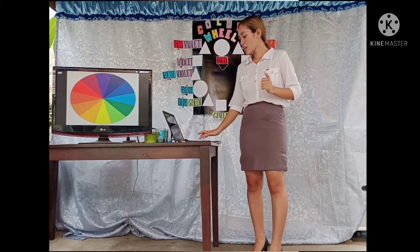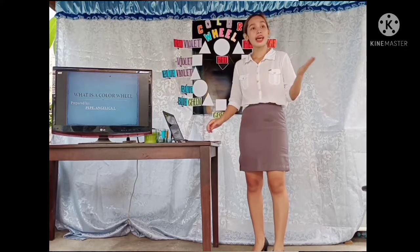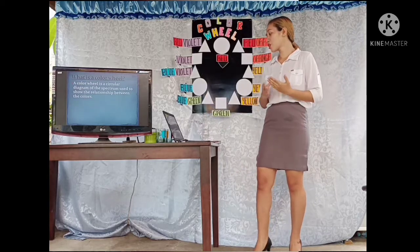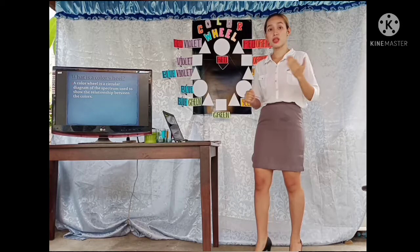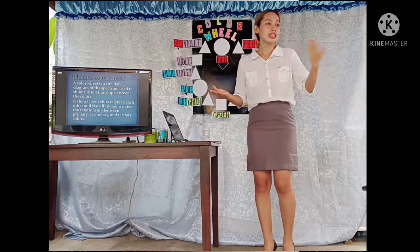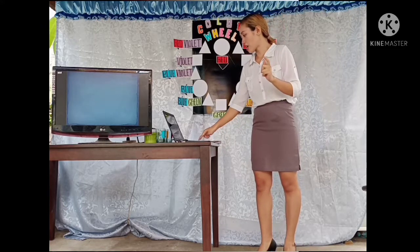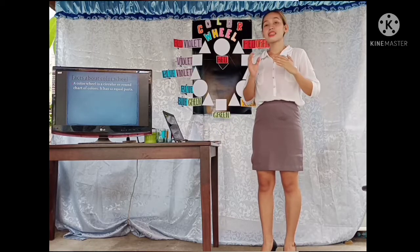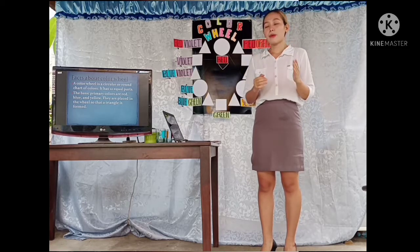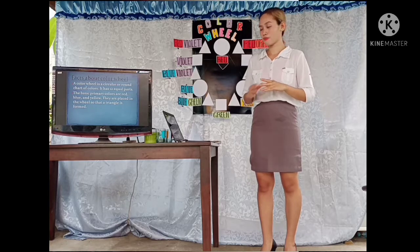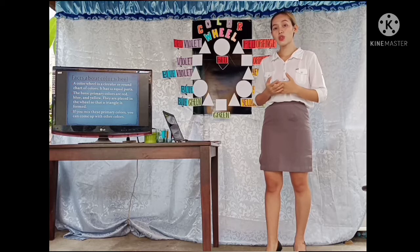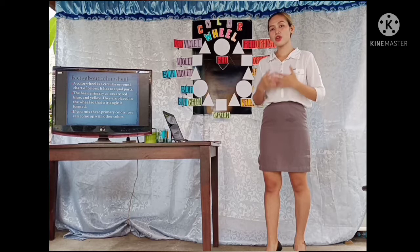Class, our topic for today is all about a color wheel. What is a color wheel? Any idea? None. So, a color wheel is a circular diagram of the spectrum used to show the relationship between the colors. It shows how colors relate to each other and visually demonstrate the relationship between primary, secondary, and tertiary colors. Did you know that a color wheel is a circular or round chart of colors that has 12 equal parts? The basic primary colors are red, blue, and yellow. They are placed in the wheel so that a triangle is formed. If you mix these primary colors, you can come up with other different colors.